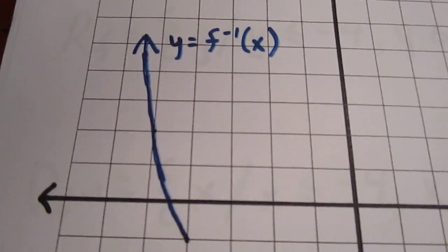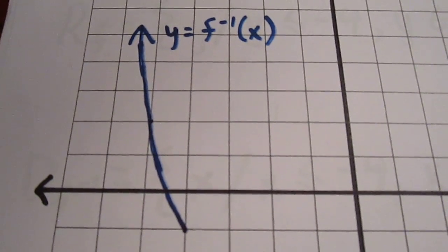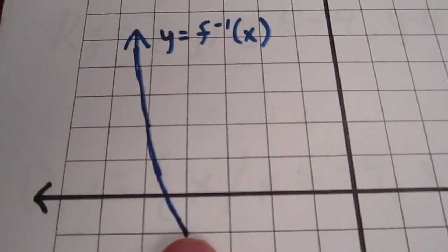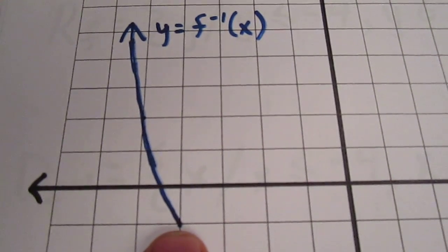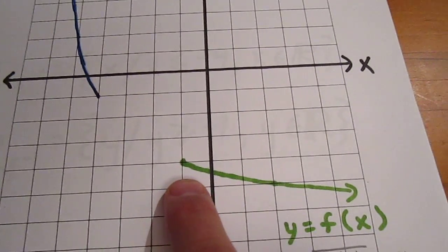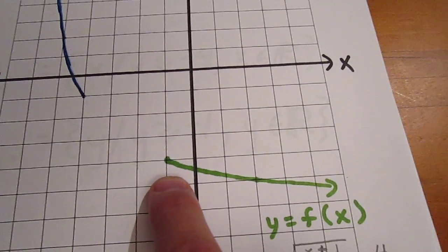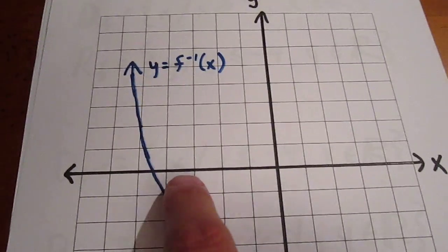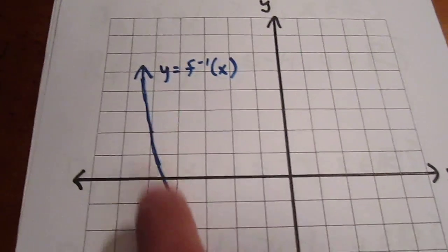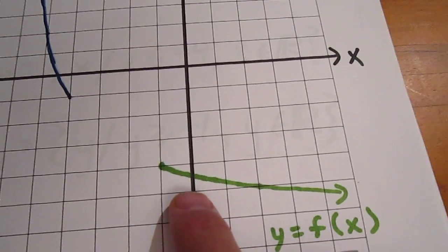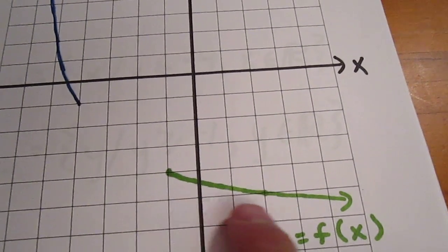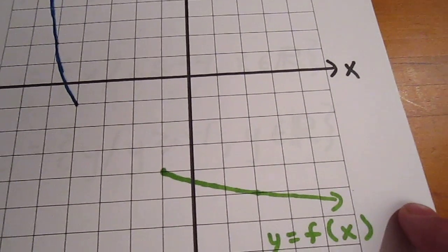We literally just go from the inverse back to the original. So if the vertex here is negative 4, negative 1, the vertex of the original will be negative 1, negative 4. Since this opens up and to the left, ours will open to the right and down. And there we go.